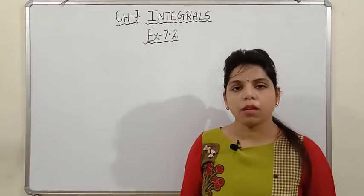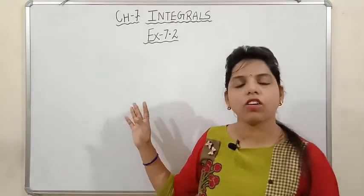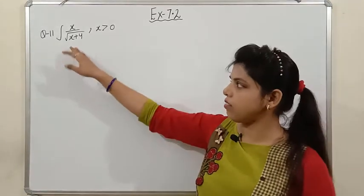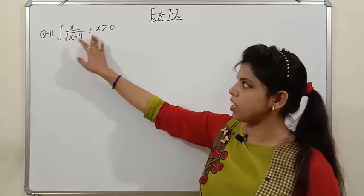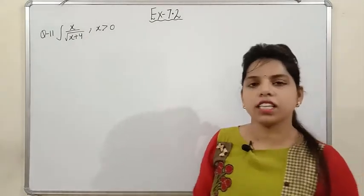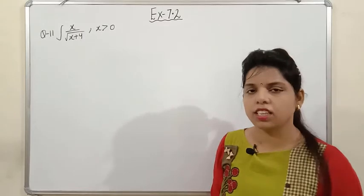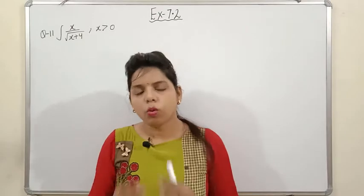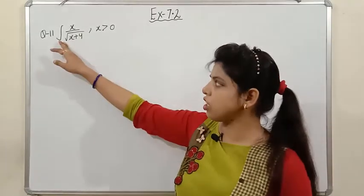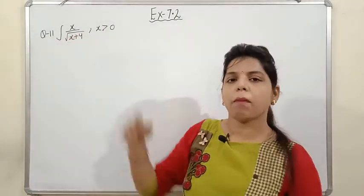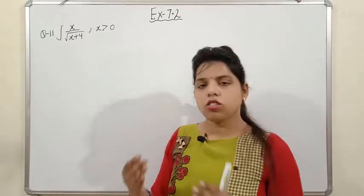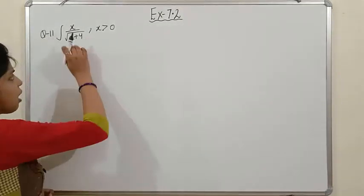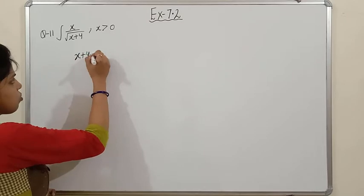Without wasting time, let's start Question 11 of Exercise 7.2. Question 11 is the integration of x upon √(x+4), where x is greater than 0. The key trick here: whenever your function is under a square root, to remove that square root from the function, put the expression under the square root equal to t squared, so the square root gets eliminated and the question simplifies.